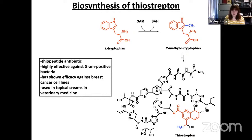TSRM catalyzes the first committed step in the biosynthesis of the quinaldic acid moiety of thiostreptone, pictured here in blue and red, which is believed to confer most of the favorable pharmacological properties. TSRM methylates the inert sp2-hybridized C2 position of L-tryptophan to form 2-methyltryptophan, which I'll refer to as methyltrip for the rest of this talk.